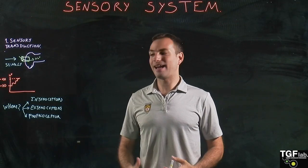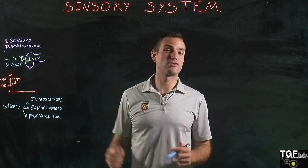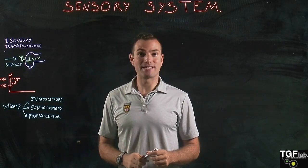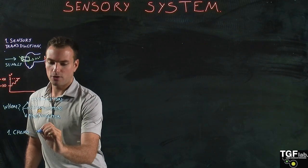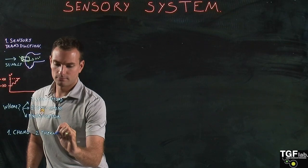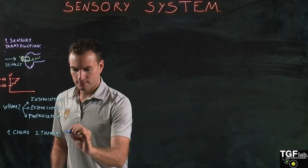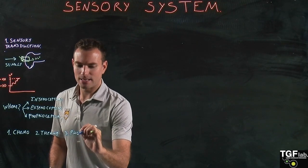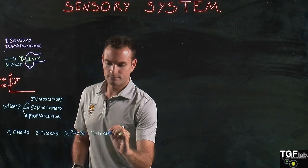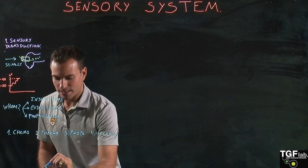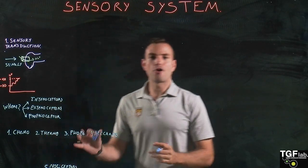We can have another classification that depends on the type of stimuli that the receptors detect. According to stimulus type, we have first chemoreceptors, then thermoreceptors which are sensitive to temperature, photoreceptors that are sensitive to light — for example in vision — mechanoreceptors, and finally nociceptors, which are responsible for sensing pain.